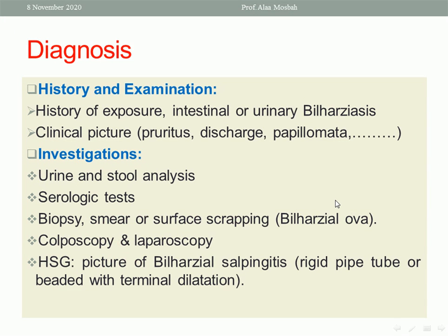We can reach a diagnosis from the clinical presentation and from a history of exposure to intestinal or urinary bilharziasis. The diagnosis can be confirmed by investigation: doing urine and stool analysis searching for the parasite, doing serological tests such as ELISA searching for antibodies or circulating antigens, and biopsy, smear, or scraping from the lesion — sending for histopathology and searching for bilharzial ova, including the criteria of giant cells, eosinophils, lymphocytes, and plasma cells surrounding the ova.